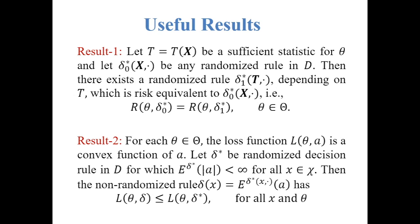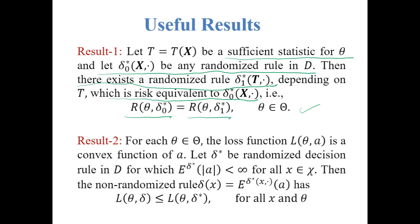We will move to Bayesian methodology. First of all, we will discuss some useful results related to decision theory. Result 1: let T be a sufficient statistic for a known parameter theta, and let delta-not-star be any randomized decision rule in D. Then there exists a randomized decision rule delta-1-star which depends on the sufficient statistic T and is risk equivalent to delta-not-star, that is r(theta, delta-not-star) equals r(theta, delta-1-star). This result is important: if we have a sufficient statistic T, we only need to consider decision rules which are functions of T.